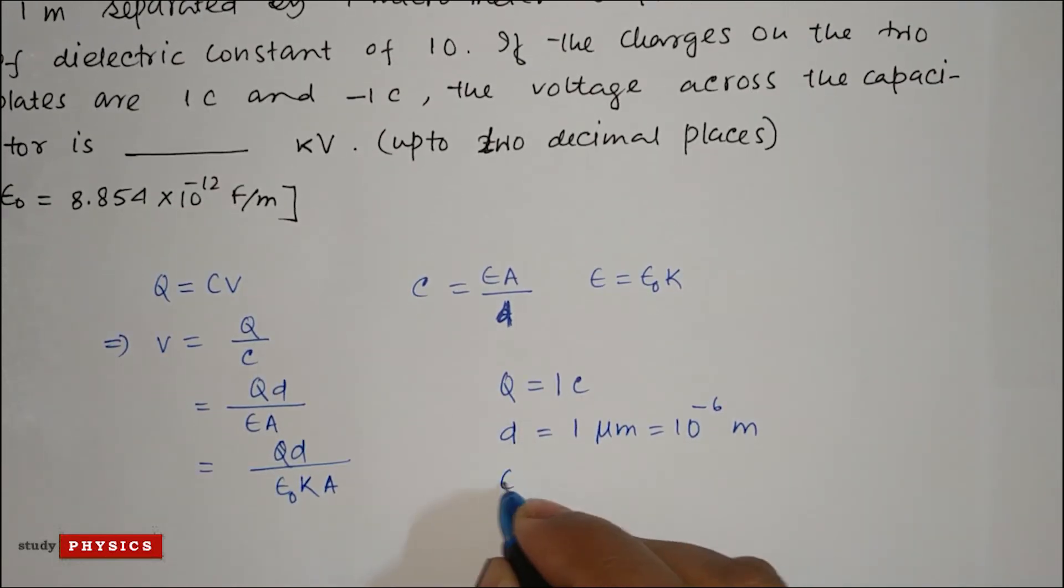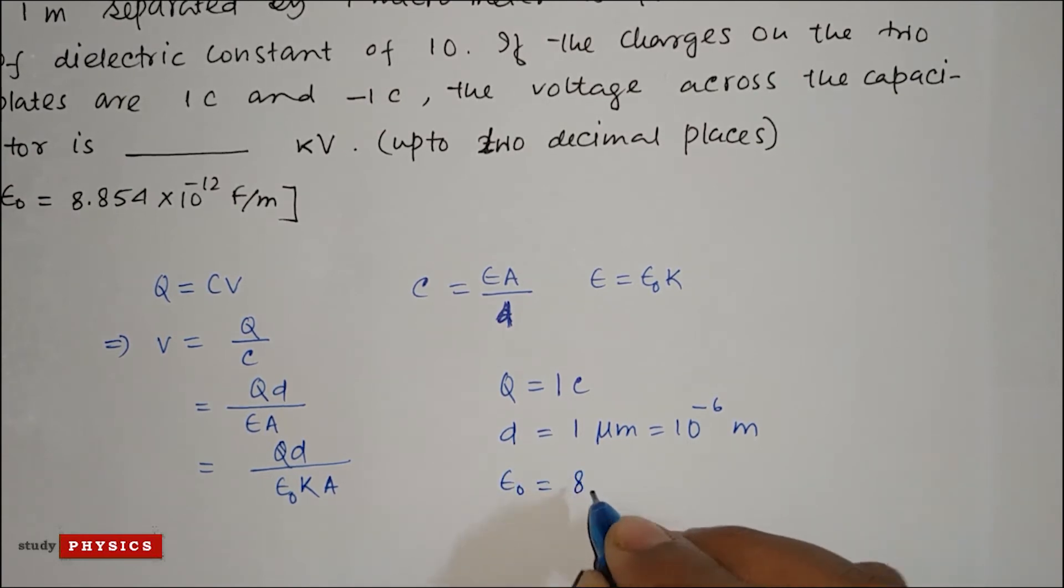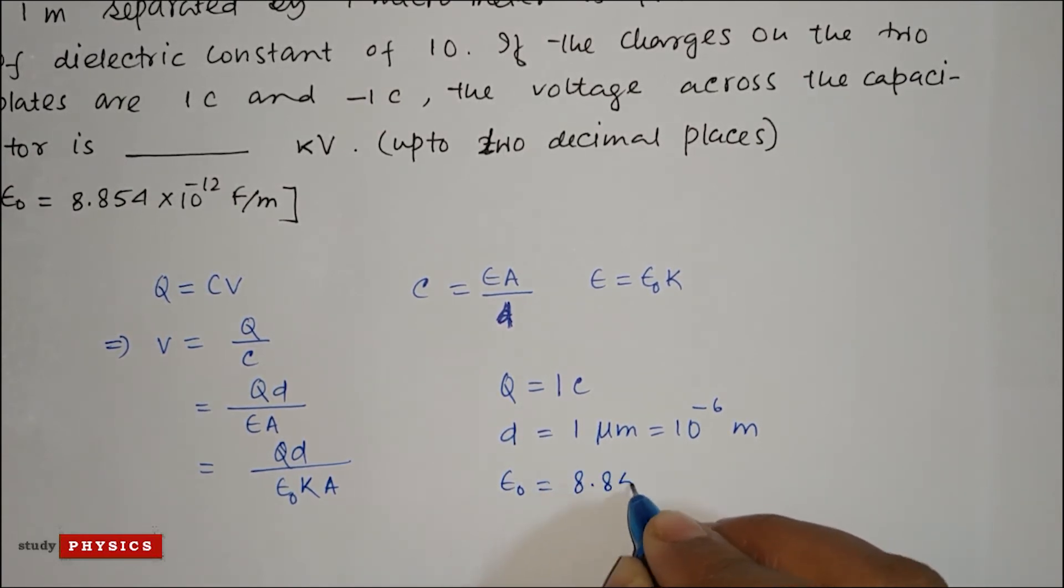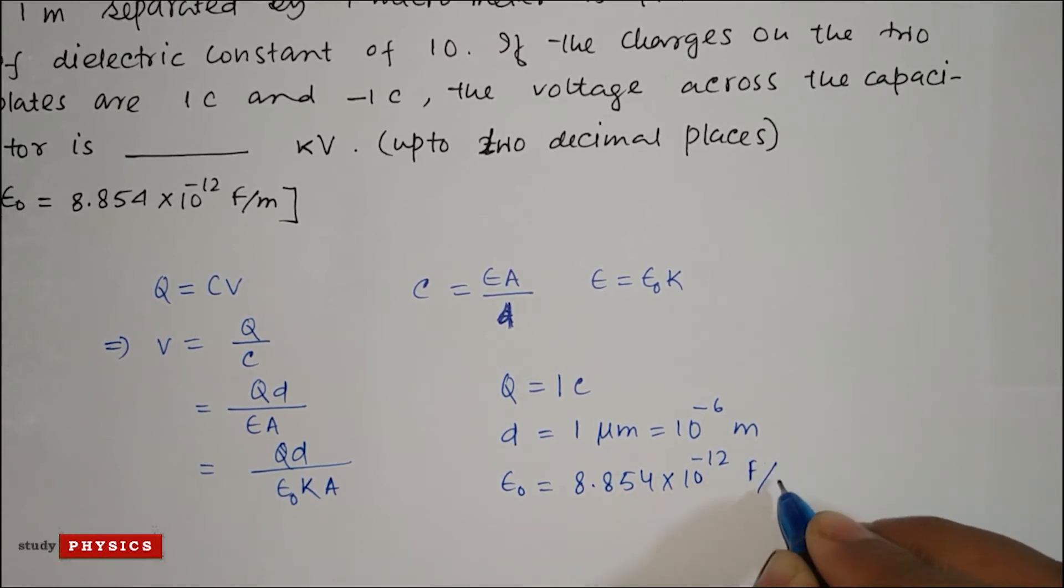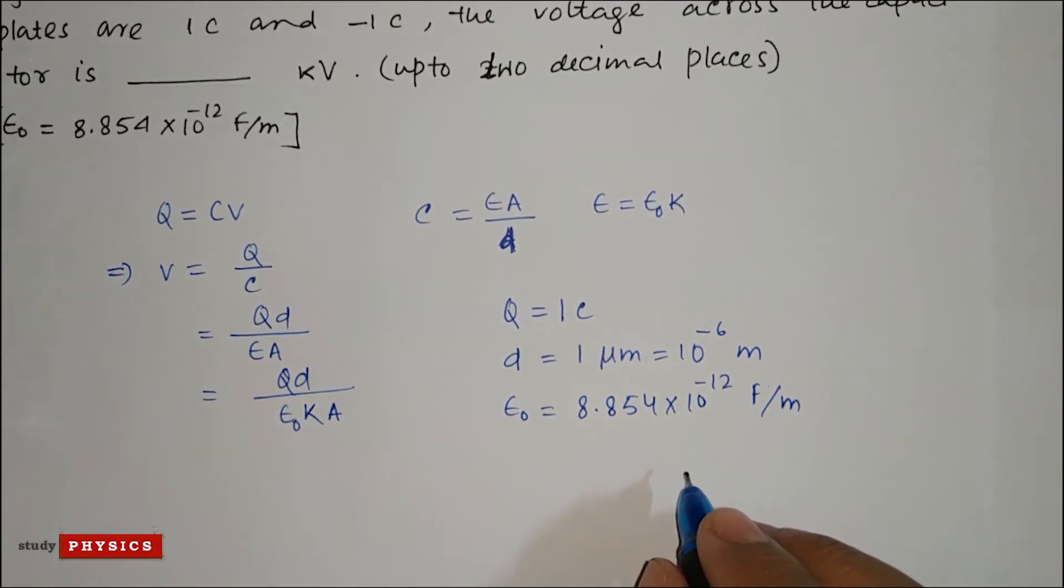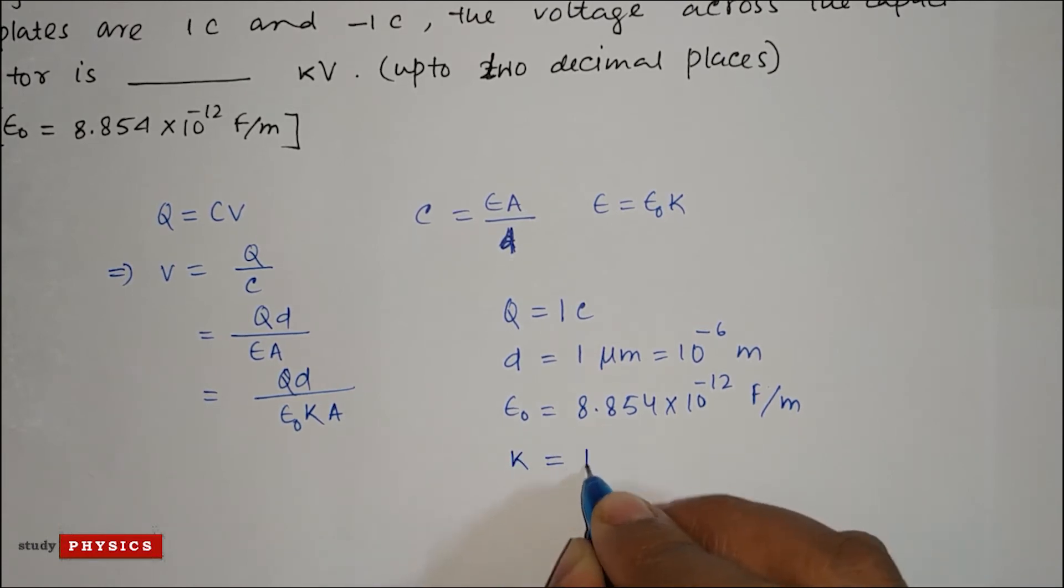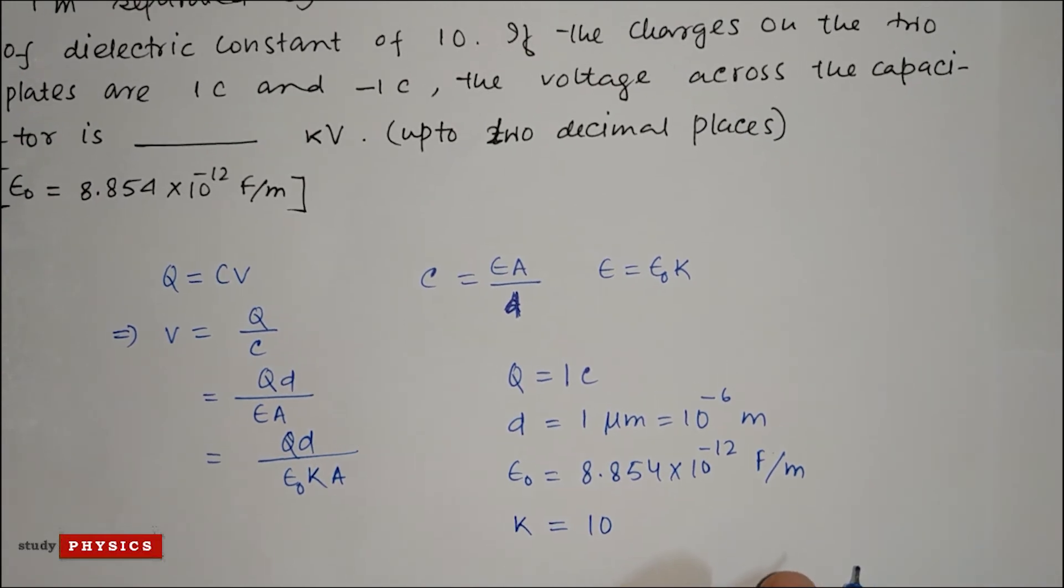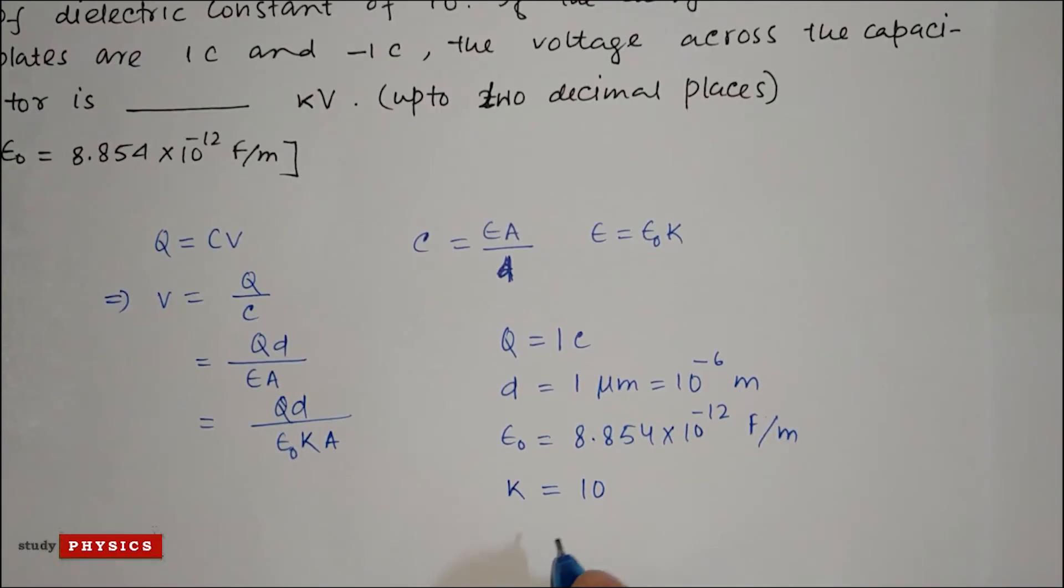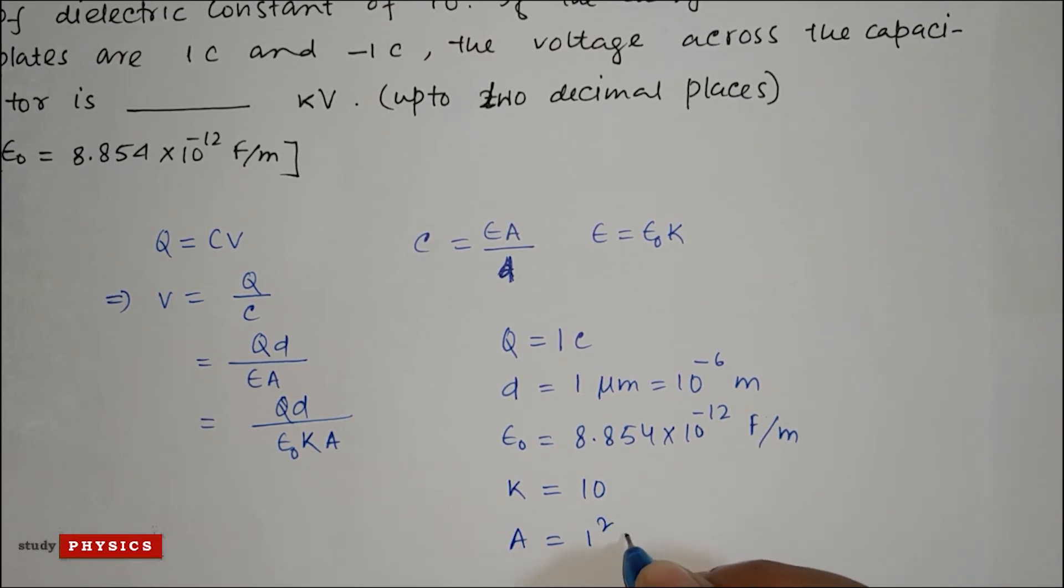Then epsilon naught is the permittivity of free space, 8.854 times 10 to the power minus 12 farads per meter. And the dielectric constant K is 10. And A is plates of side 1 meter, that means 1 meter squared.